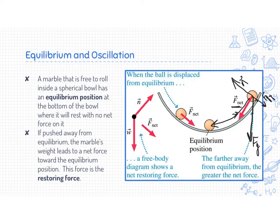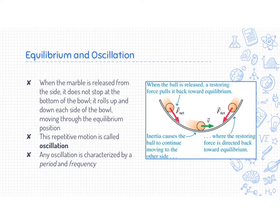Anytime we have this type of motion, a restoring force brings the object back toward equilibrium. But when the marble is released and moves toward equilibrium, it doesn't stop there — because when it hits equilibrium it still has velocity. So the restoring force brings it back to equilibrium and it has velocity, causing it to pass through and go up the other side. If we let this marble roll back and forth with no friction, it will just keep going back and forth indefinitely.